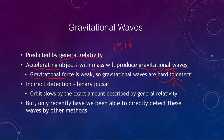Gravitational waves are analogous to electromagnetic waves. Electromagnetic waves are caused by accelerating charged particles and are related to the electromagnetic force, so they are much stronger. That's why we can see electromagnetic waves from accelerating charged particles — visible light, X-rays, or radio waves are much easier to detect than gravitational waves.